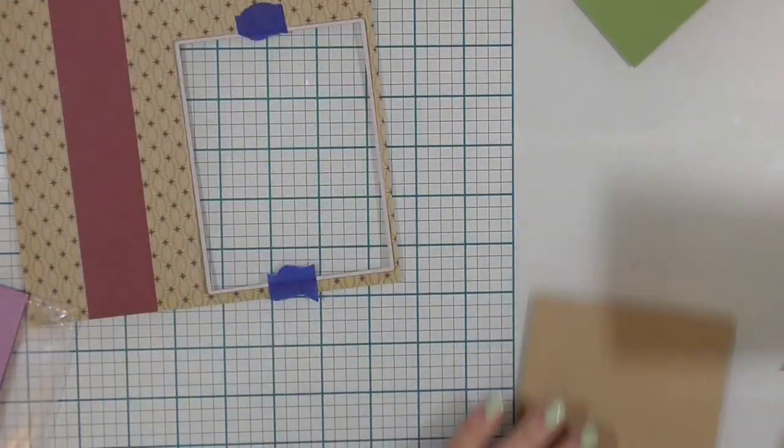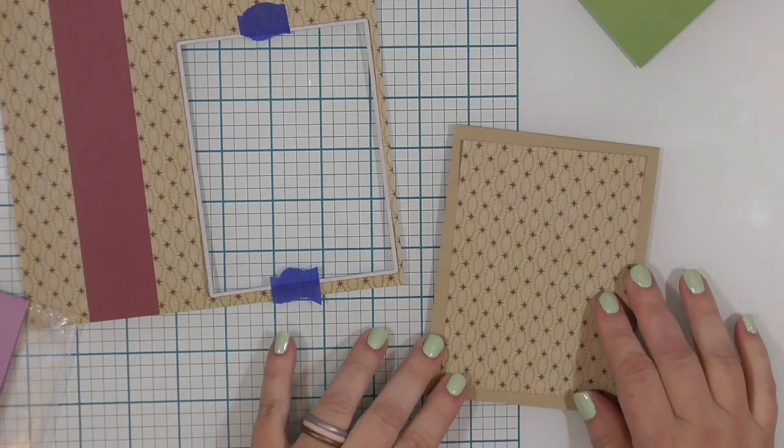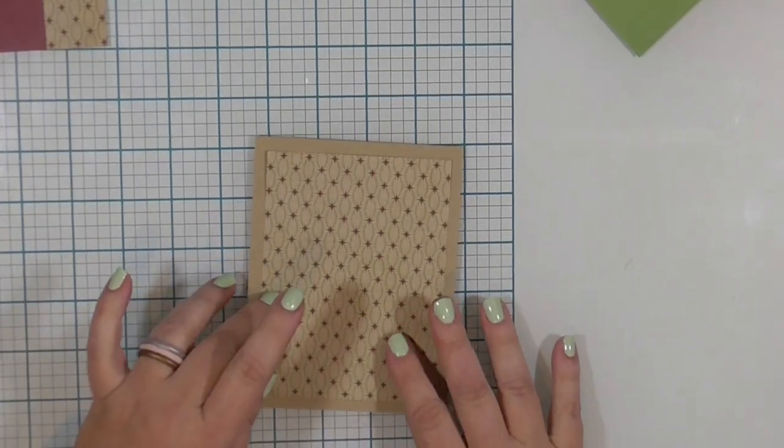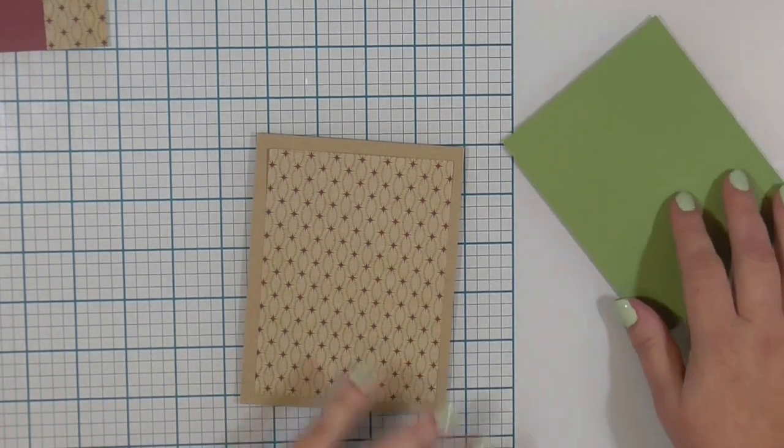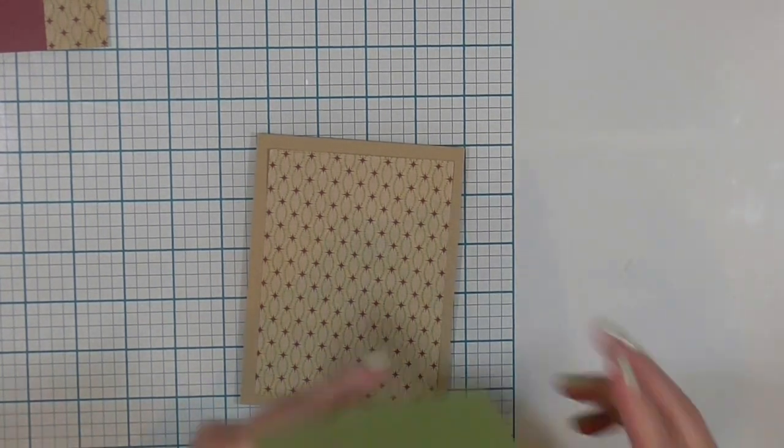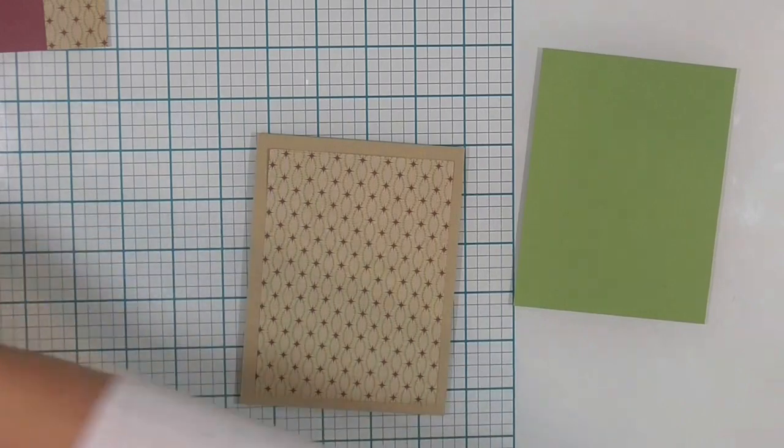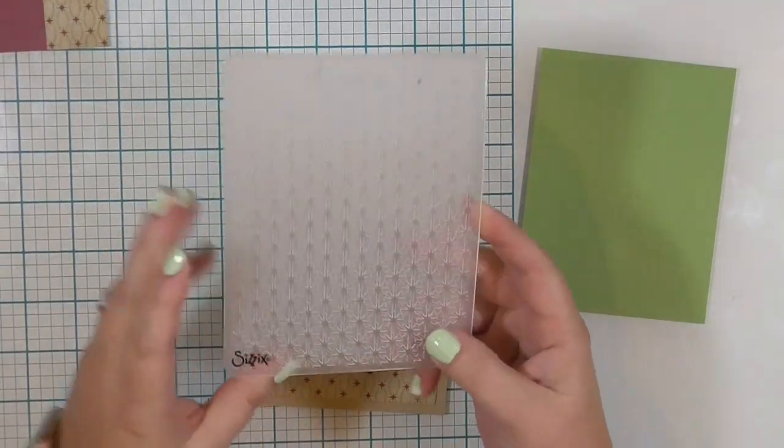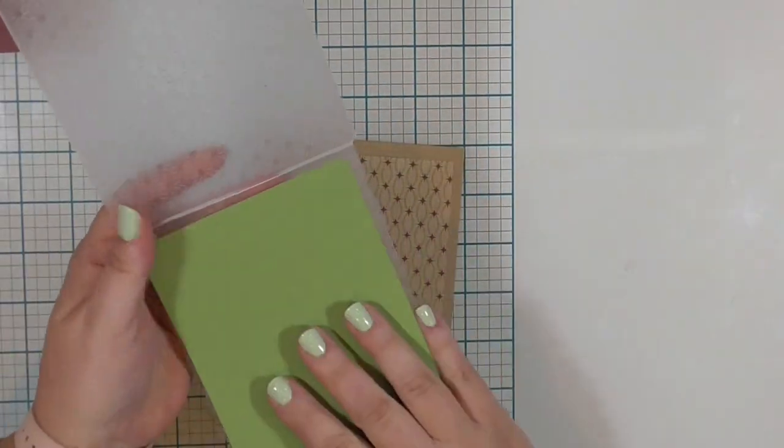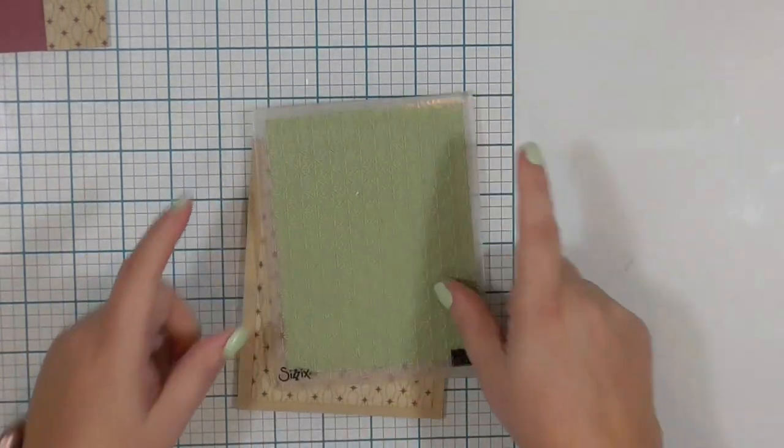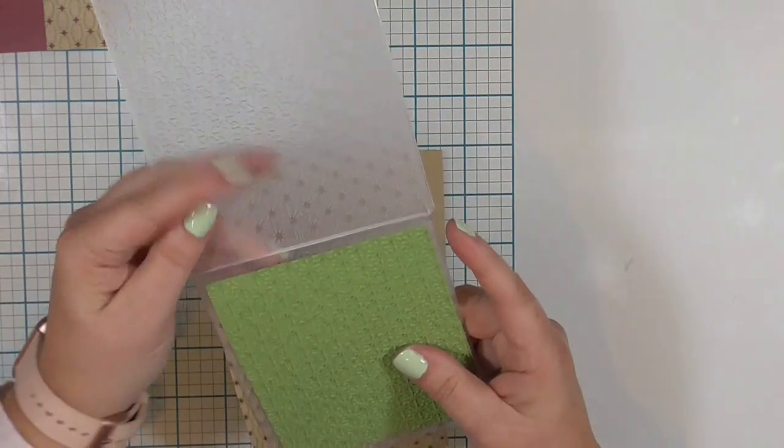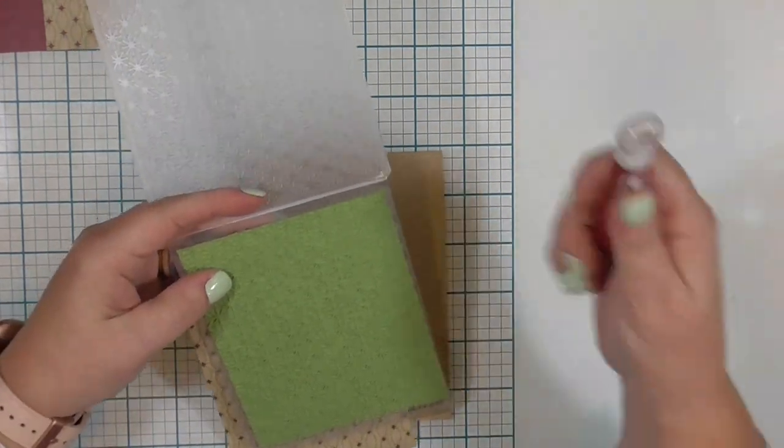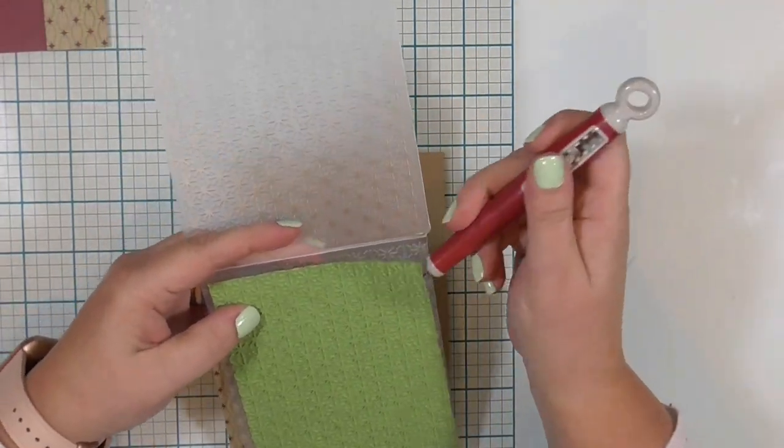I have sent this through my Spellbinders Platinum die cut machine. And I'm not loving how it looks on the card base. It needs a little something behind it. So I decided then to take this green cardstock, and this is about four inches by five and a quarter inches. And I'm going to send it through my die cut machine with this embossing folder. And it is going to look fabulous.